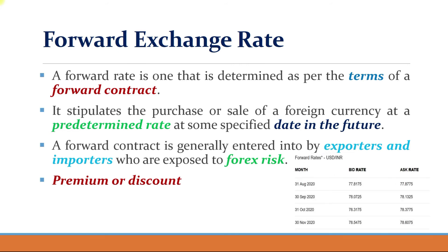Looking at forward rates between US dollar and INR, we have bid rate and ask rate. Bid rate is the rate at which the bank buys US dollars from you; ask rate is the bank's selling rate at which it sells US dollars to you. For August 31st 2020, the bid forward rate is rupees 77.8175. Similarly, we have forward rates for September, October, and November months — so for the next six months you can find forward rates for future transactions.